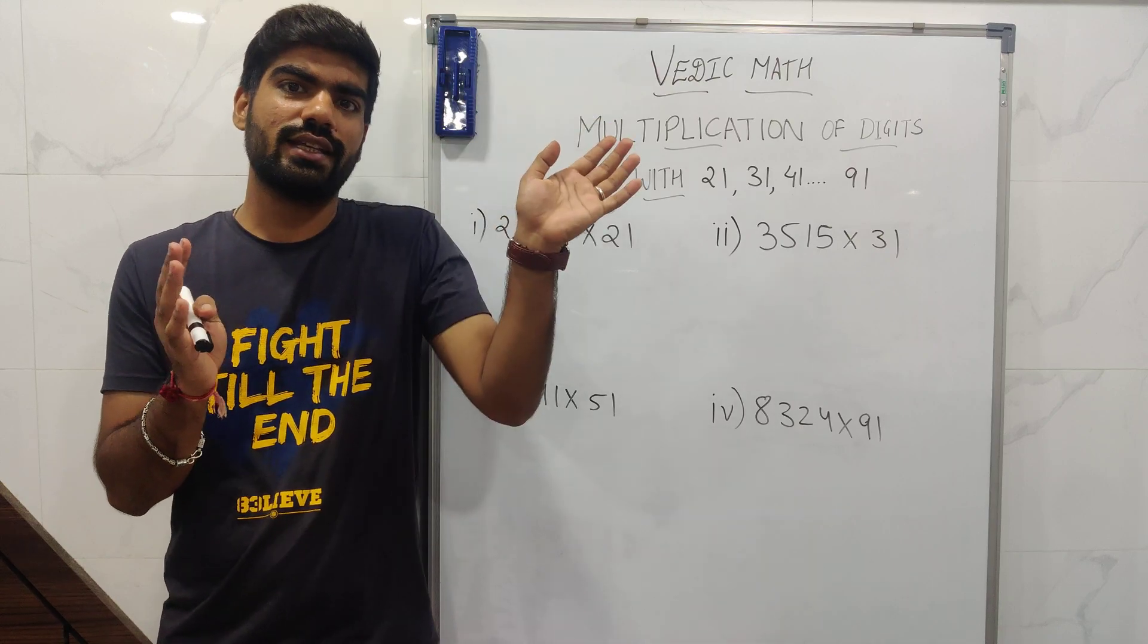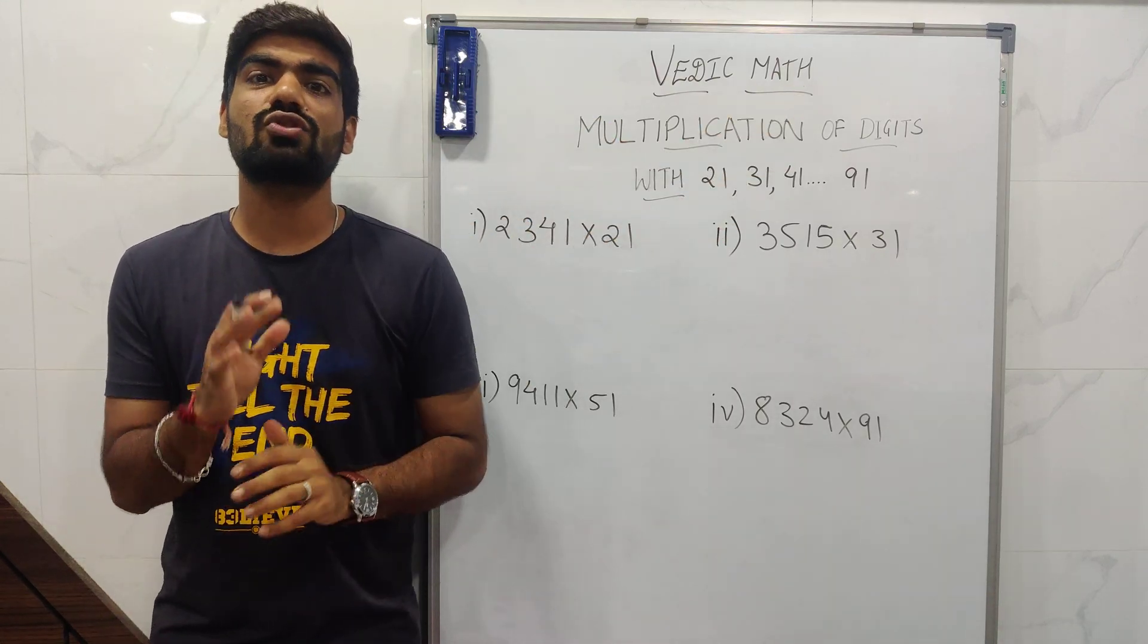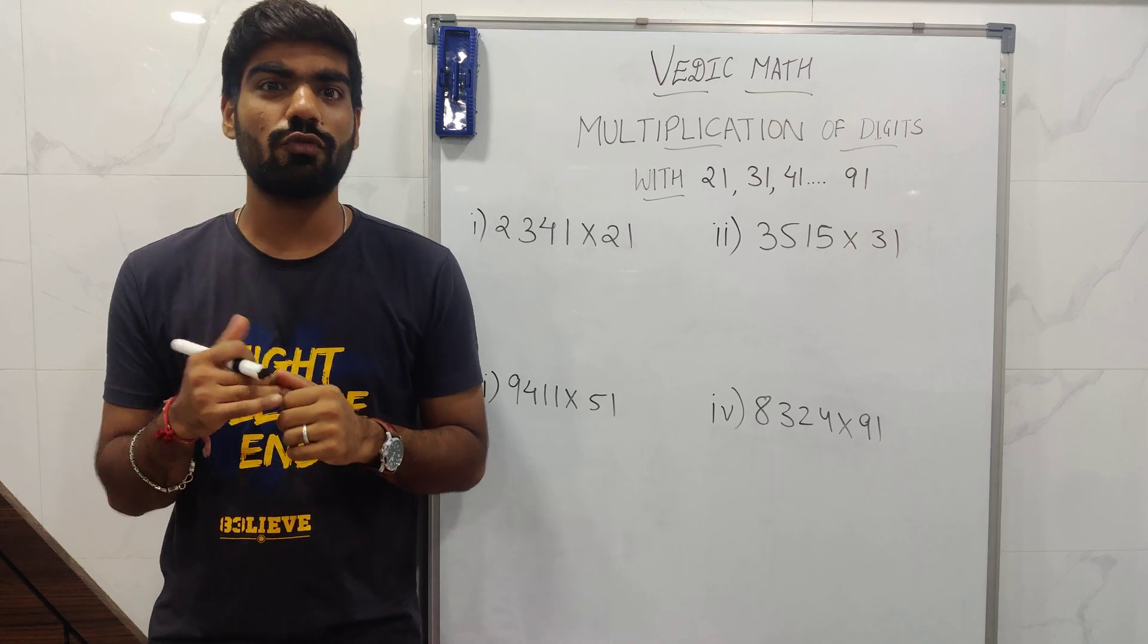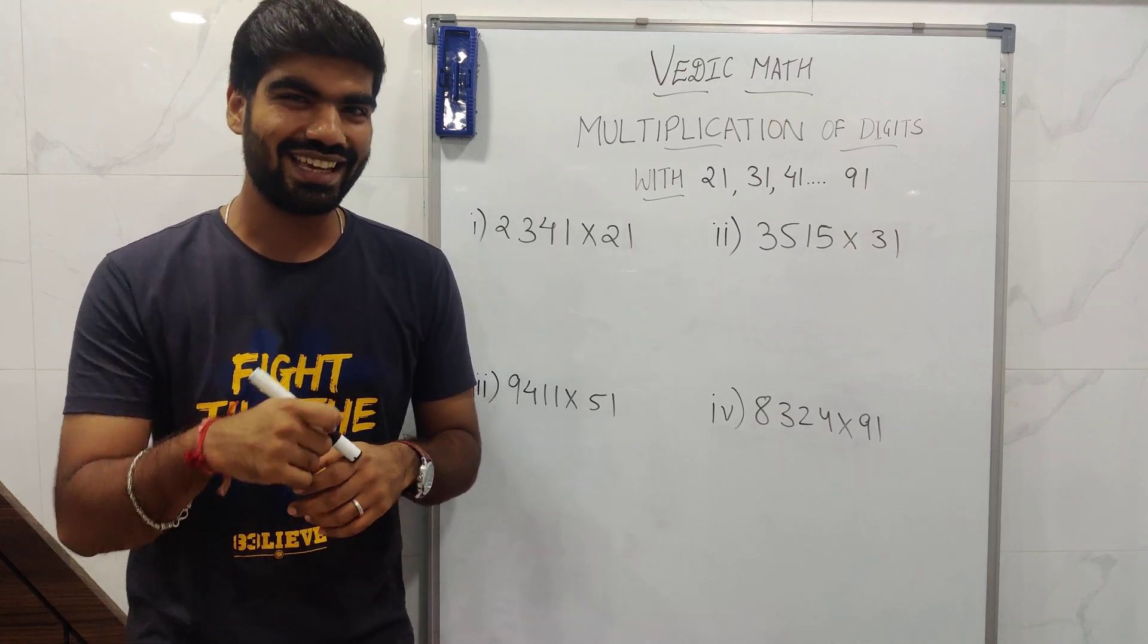So the concept of 11 to 19 and this 21, 31, 41 to 91 is totally opposite. Opposite in terms of what? Let's learn right now. Okay, come on.